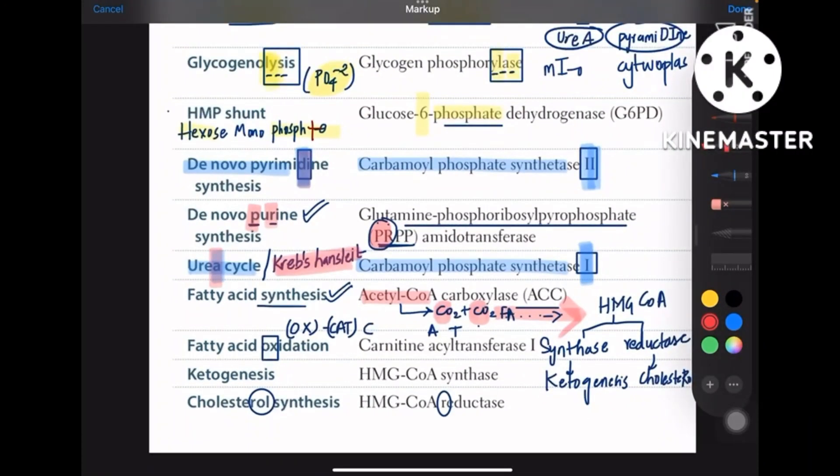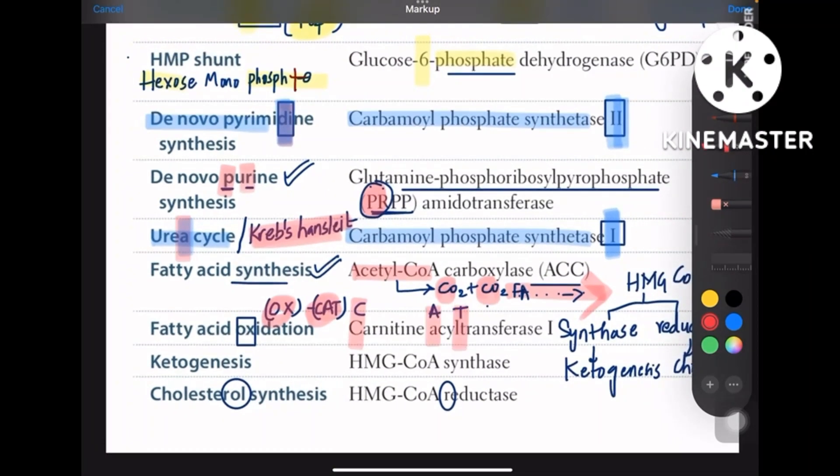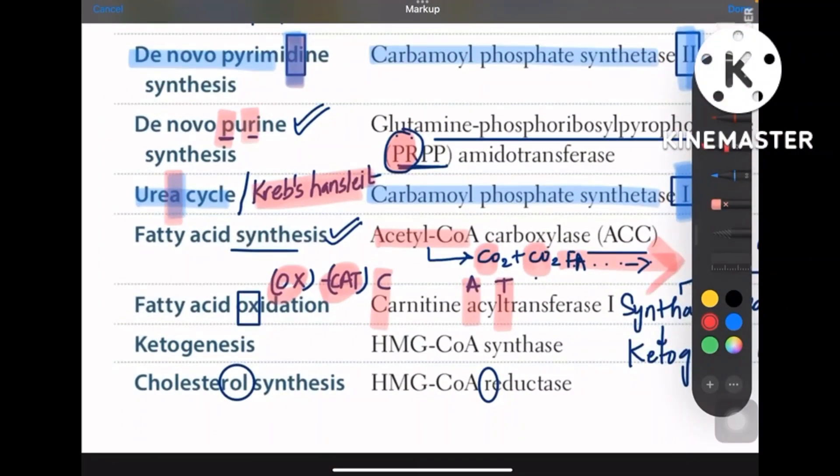Coming to fatty acid oxidation, remember it like ox and cat go together, two animals. So cat meaning carnitine acyl transferase. So fatty acid oxidation is about carnitine acyl transferase.